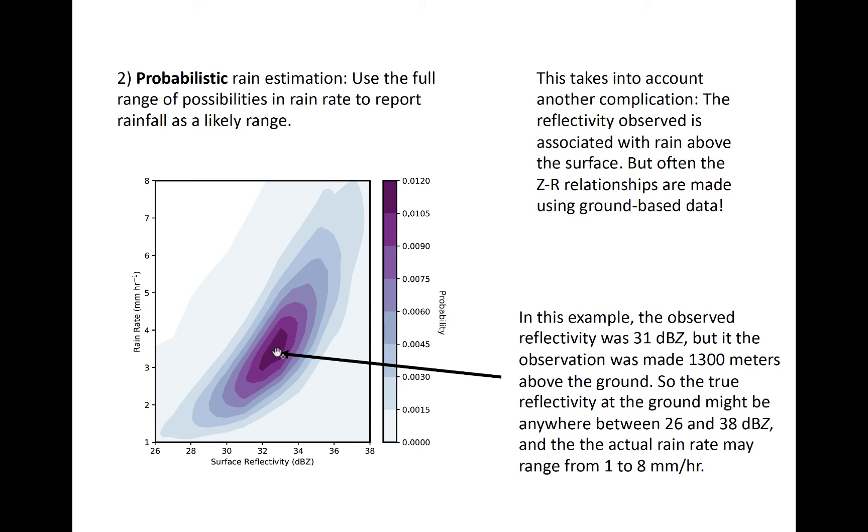The maximum likelihood is denoted by the center of the PDF, where the darkest colors are shown, which is around 3 to 4 millimeters per hour, for a most likely surface reflectivity of 33 dBZ, a little larger than the 31 dBZ measured above the ground.